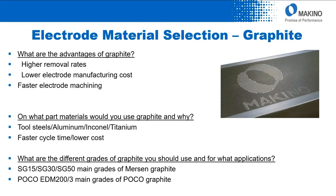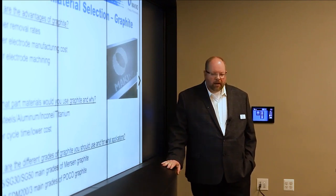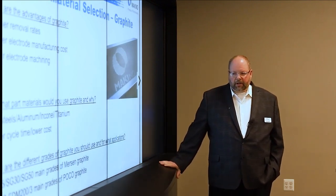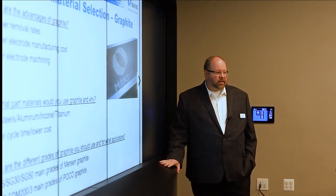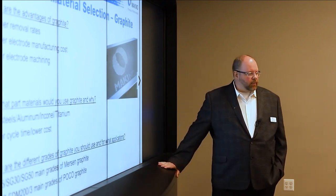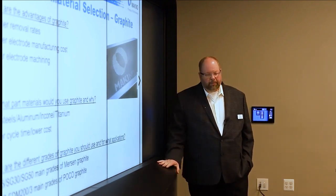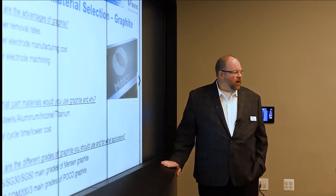What are the different grades of graphite and why? Some grades we sell through SST are SG15, SG30, and SG50 — mainly SG30 and SG50, which are very good grades that compare to the POCO EDM-200 and POCO-3. One of the biggest reasons we use the Merstein graphite is cost — it's about 40% less. If you're using POCO EDM-200 and POCO-3, take a look at the SG grades; they perform almost exactly the same.